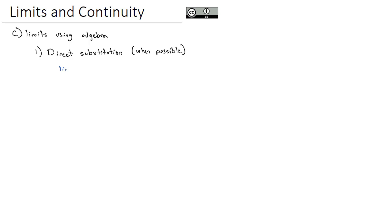For example, if we have the limit as x approaches 4 of the square root of 5x minus 4, we want to know what this is getting close to.